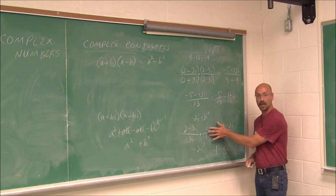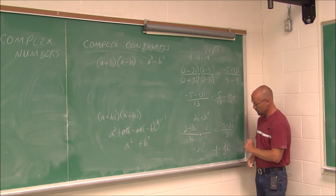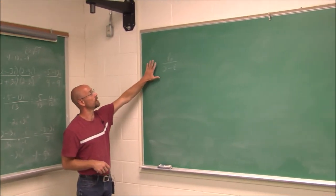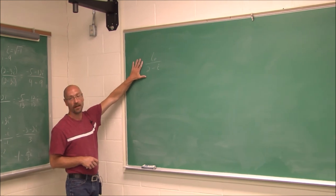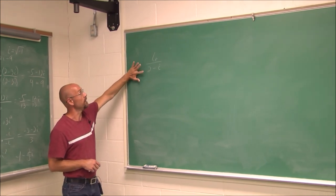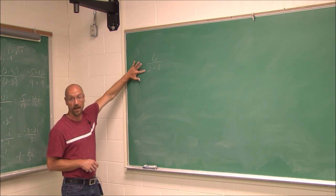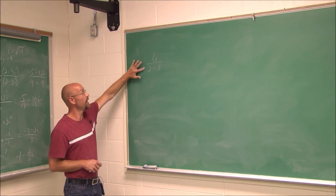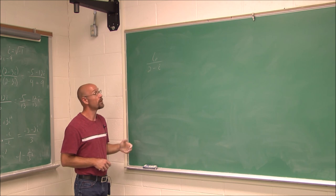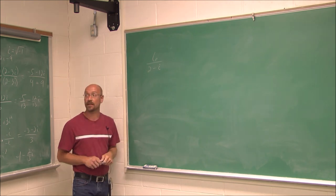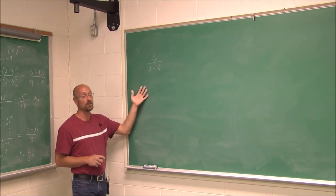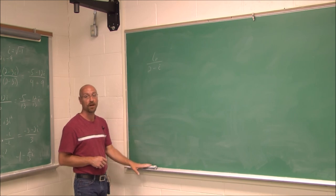Let's look at one more example — this is for you to try. Multiply top and bottom by the complex conjugate, simplify, and make sure you write it in a + bi form. This has been section 6.7, multiplication and division with complex numbers. Thank you for watching.